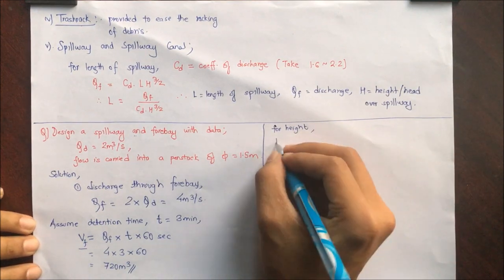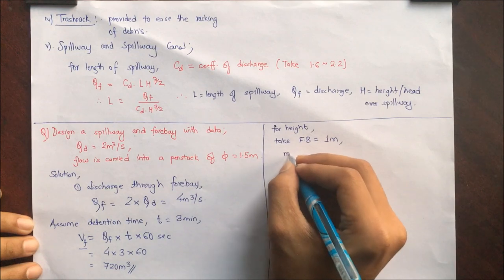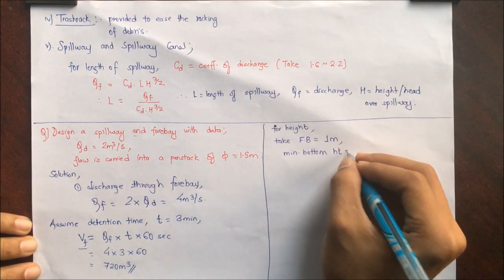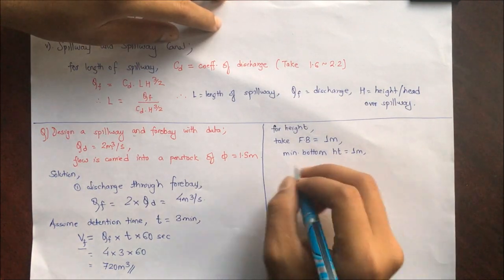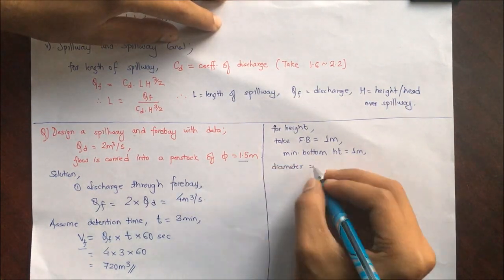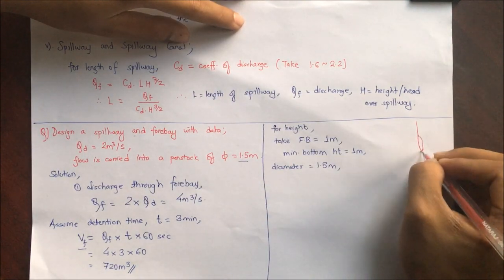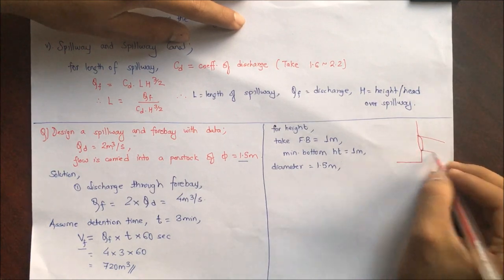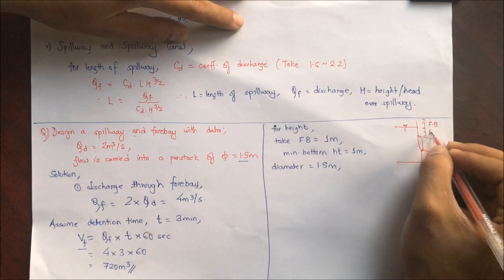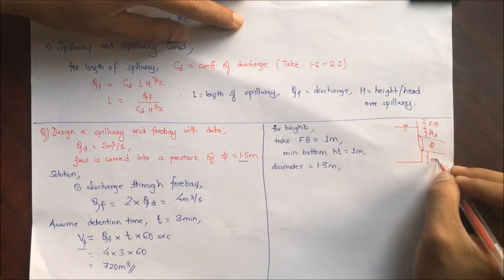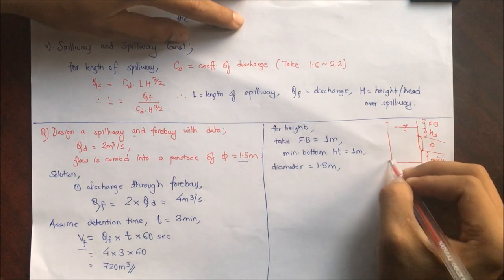For height calculation, taking freeboard as 1 meter if not specified, and minimum bottom height (settling height) as 1 meter. Diameter D is 1.5 meter as provided. We can draw a figure showing the penstock portion: freeboard of 1 meter at top, then H as submergence height, then diameter of penstock, and minimum settling height for sediments at the bottom — giving total height H.